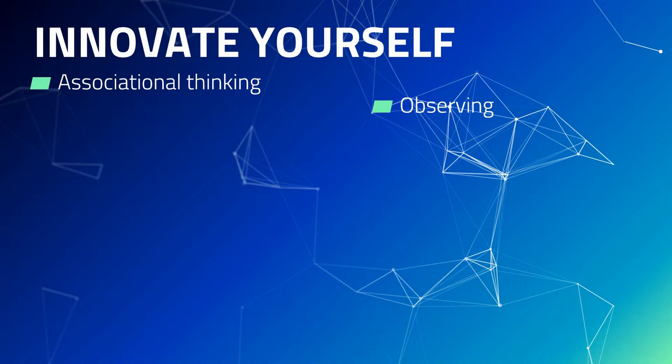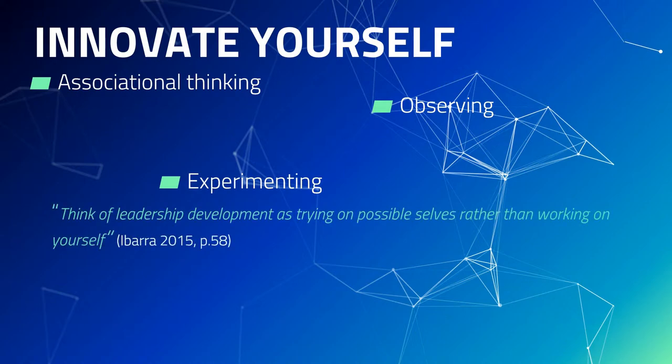The third skill is experimenting. Experimenting doesn't always have to be an external thing we do — in fact, the concept of adaptive authentic leadership requires experimenting with different versions of ourselves. Take a scientific approach: change your routine for a week, or how you talk to your peers, or even your dress style. Observe your feelings and the responses from your peers and make sure you record it. Experimenting helps us identify the strengths and weaknesses that are conditional to fostering innovation.